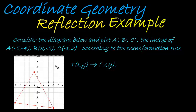So here we have another reflection example, this time giving us a transformation rule. So let's see. First of all, consider the diagram below and plot A, B and C, all of them accent, the image of A, B and C according to the transformation rule.